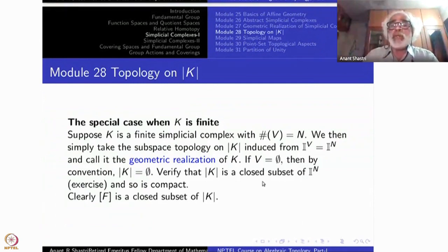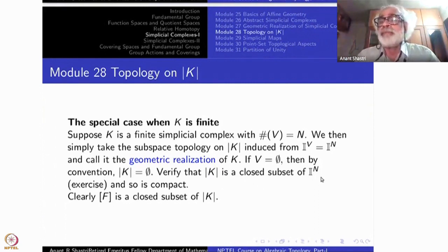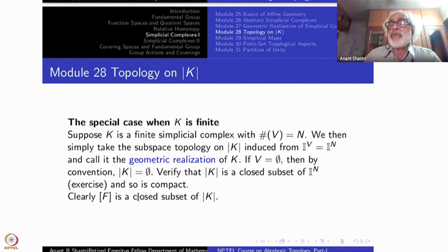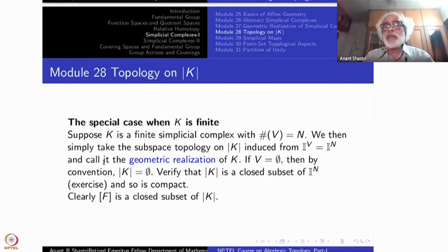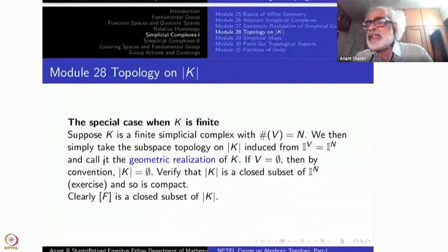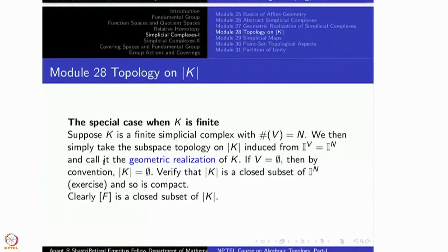Notice that mod k is given by a closed condition, so mod k is a closed subset of I^V. In particular, it is compact — a closed subset of a compact set is compact. Each closed simplex [f] is again a closed subset of mod k, also given by a closed condition on coordinate functions: equalities and intersections of them, making it a closed set.